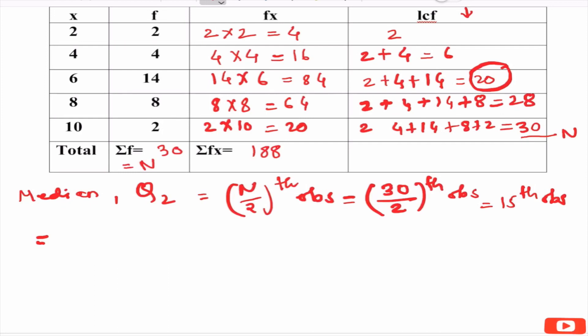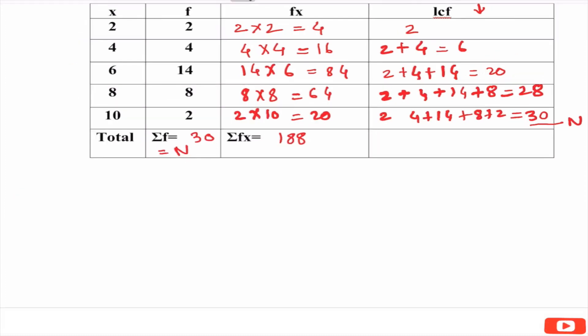Exceeding 15 for the first time is at the place 20. So corresponding observation is 6. So 6 is your median. Again median has units, but as the units are not given we are writing just units.